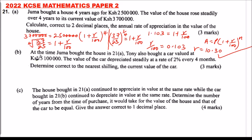Part B: At the same time Juma bought the house in 21A, Tony also bought a car valued at 5,100,000 Kenyan shillings. The value of the car depreciated steadily at a rate of 2% every four months. Determine correct to the nearest shilling the current value of the car.